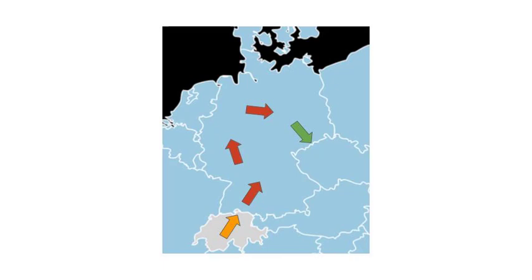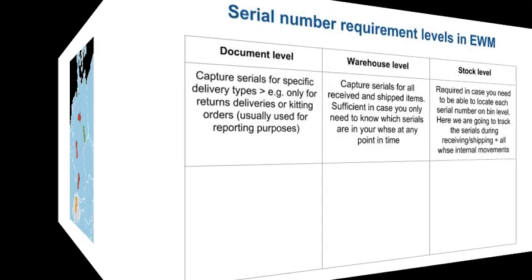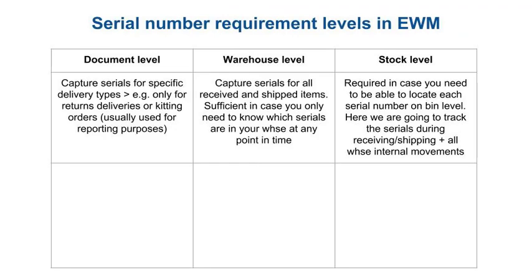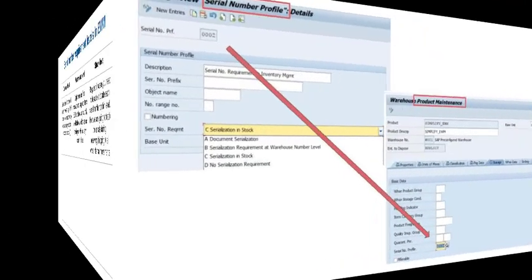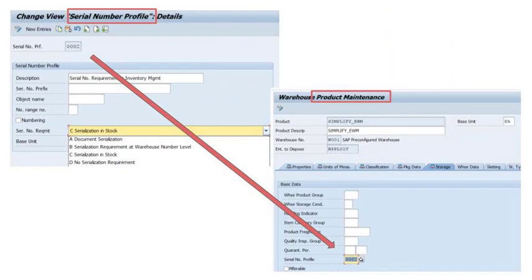Anyhow, we still think it's a good summary to understand the three options that we have in SAP EWM. Although you will probably be able to draw the system-related conclusions on your own, we give you a quick overview about the corresponding system settings for each approach. These settings are captured on the serial number profile, which is in turn assigned to the product master data. This also means that you can make the decision about the degree of tracking on product level.